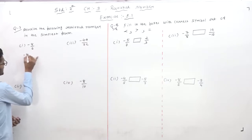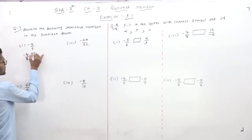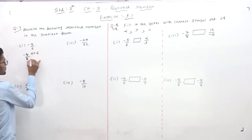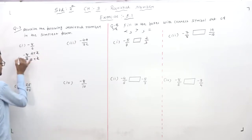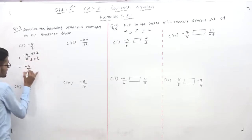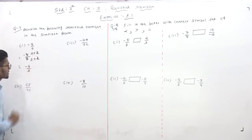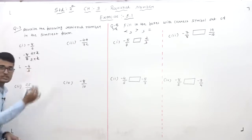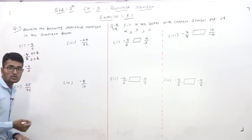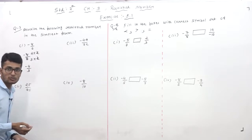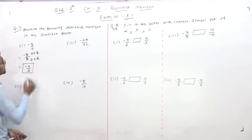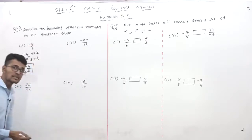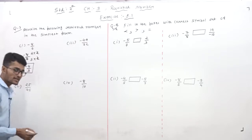So let's start. First of all, given: minus 8 by 6. Cutting is possible — 8 is 4 times 2, and 6 is 3 times 2. So we cut by 2, and we get minus 4 by 3. Now minus 4 and 3 cannot be cut further, so minus 4 by 3 is the simplest form of minus 8 by 6.